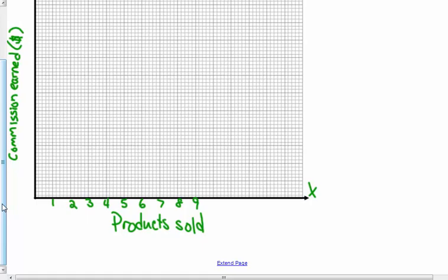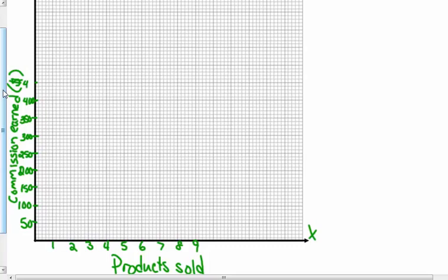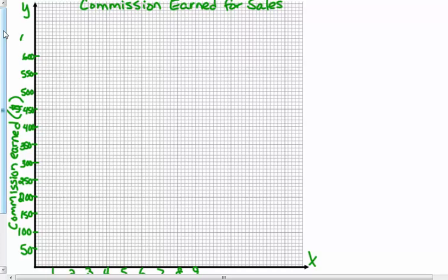And each centimeter on the y-axis represents fifty dollars. So: fifty, one hundred, one fifty, two hundred, two fifty, three hundred, three fifty, four hundred. How high do I need to go? Pretty high up there, so we've got to keep going: four fifty, five hundred, five fifty, six hundred, six fifty. I think my highest number is six ten, so I'm good.